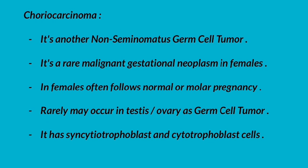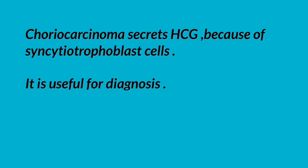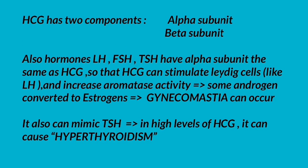Choriocarcinoma is another non-seminomatous germ cell tumor. It is a rare malignant gestational neoplasm in females, often following normal or molar pregnancy. Rarely, it may occur in the testis or ovary as a germ cell tumor. It has syncytiotrophoblast and cytotrophoblast cells. Choriocarcinoma secretes HCG because of syncytiotrophoblast cells, making HCG useful for diagnosis. HCG has two components: alpha subunit and beta subunit.